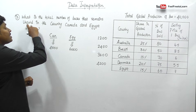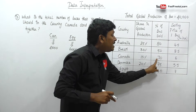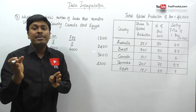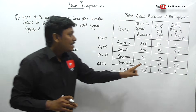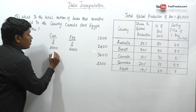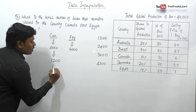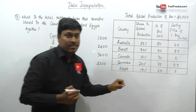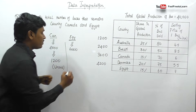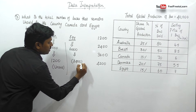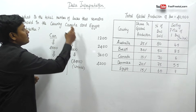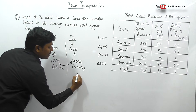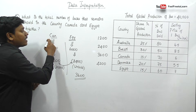We need to find total unsold buses. Canada is selling 70% of buses. If 70% is sold, then 30% remains unsold. Out of 4,000, 30% will be 1,200. So 1,200 buses are unsold in Canada. For Egypt, 60% of buses are sold, so 40% will be unsold. 40% of 6,000 will be 2,400 buses unsold. Total unsold in both countries: 1,200 + 2,400 = 3,600 buses.